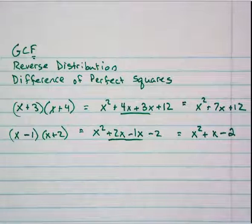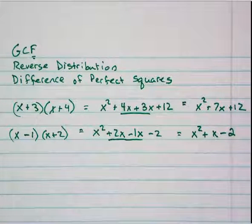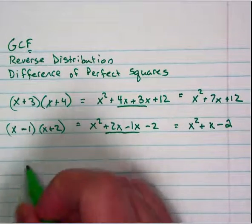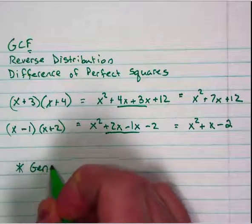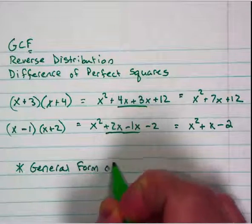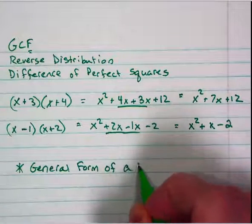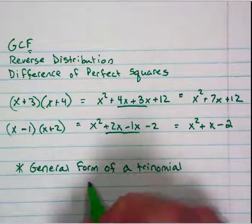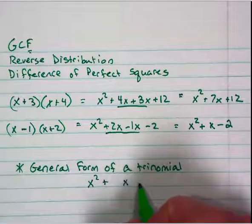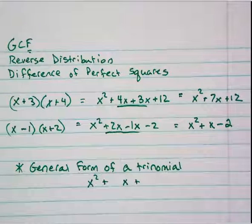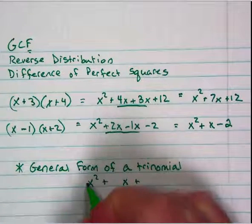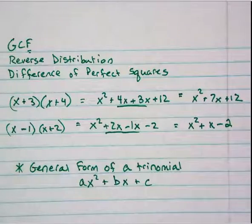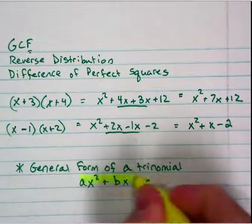In those two examples and all the other ones we've done, notice these always end up looking the same way. There is a general form here — the general form of a trinomial. In the general form, it's x squared plus something x plus a number at the end. I'm going to name those coefficients: I'll call this a, this b, and this c.